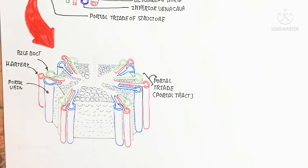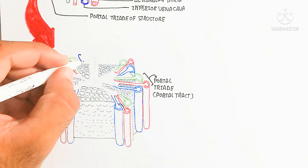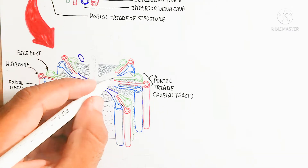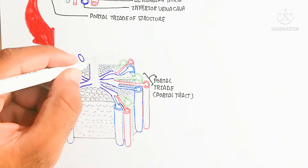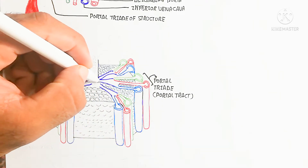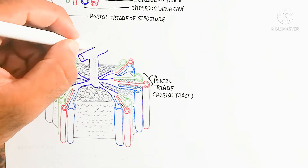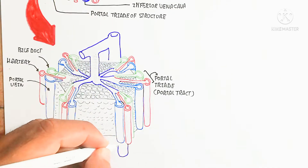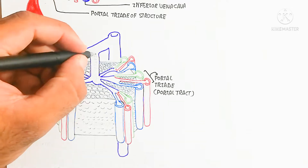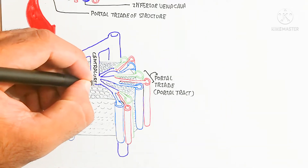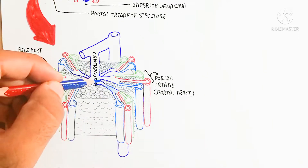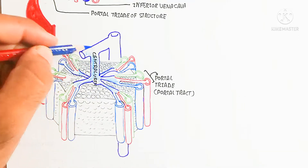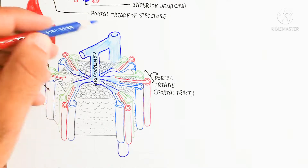The portal triad structure contains the hepatic artery, the hepatic portal vein, and the bile duct, bound together in a hexagonal shape. This hexagonal unit is known as the liver lobule, and at its center is the central vein, which moves blood toward the heart through the inferior vena cava.